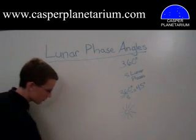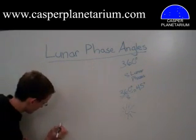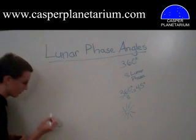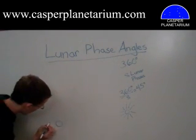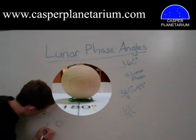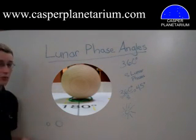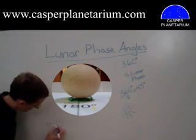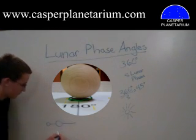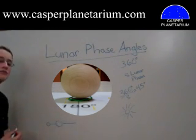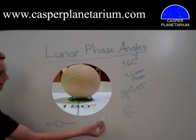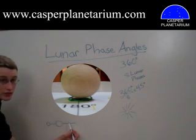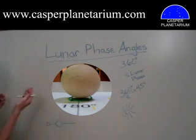Another 45 degrees — 135 plus 45 — and now we're at 180 degrees. As you may know, that's just a line. 180 degrees means here's the line connecting the Earth and the moon, and here are the light rays from the sun — it's just a straight line. So at 180 degrees, that's when all the light rays from the sun that hit the moon are reflected back towards the Earth. And so that's when you have a full moon.